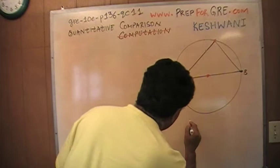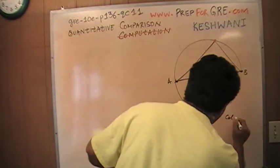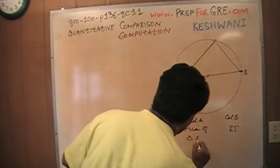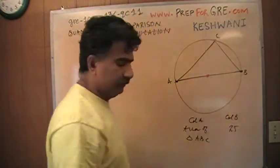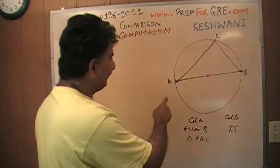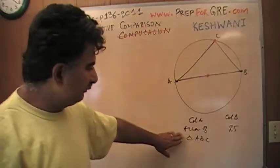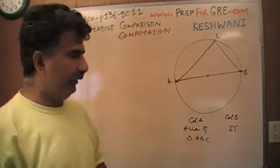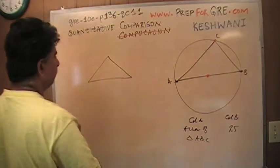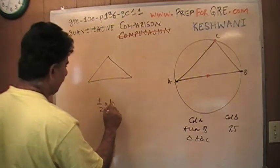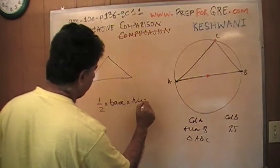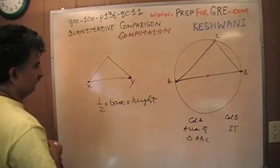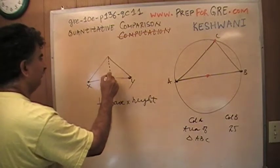What I want you to compare is column A versus column B. This is triangle ABC. What I want you to compare is the area of triangle ABC versus 25. What can you tell me? How does one find the area of a triangle? The area of the triangle is one-half base times height. This is the base here — let's call it X to Y — and the height is going to be this distance. You have to know this distance; this is the height of the triangle.